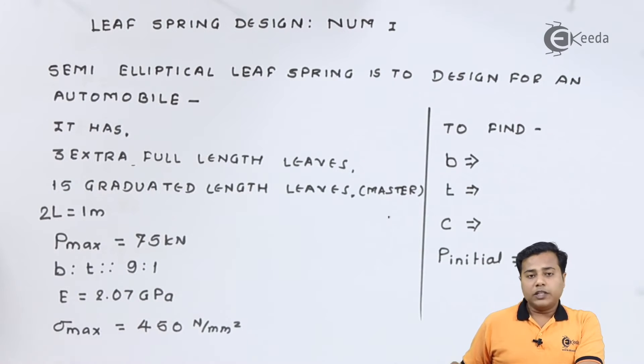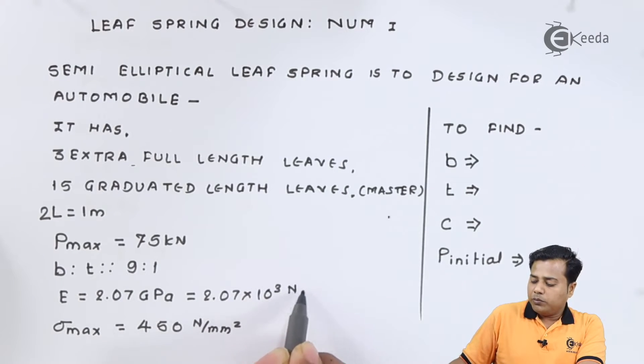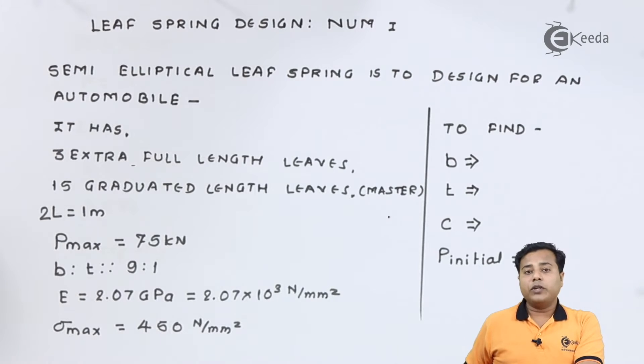The ratio between the width and the thickness of one leaf is 9:1. Further, the Young's modulus for the given material is 2.07 GPa. Let us write it 2.07 × 10^3 N/mm². And the maximum stress is 450 N/mm².